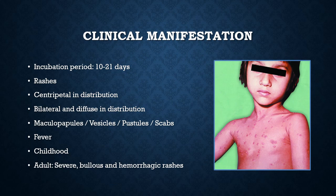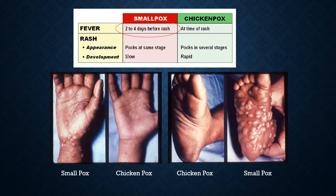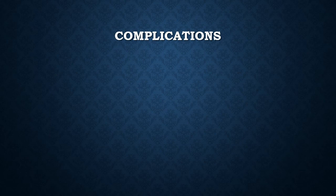Chickenpox must be differentiated from smallpox. In smallpox, fever appears two to four days before the rashes, while in chickenpox fever appears at the time of rashes. In smallpox, rashes appear at the same stage simultaneously, while in chickenpox lesions are in several stages of development. Development is slow in smallpox but rapid in chickenpox. Chickenpox is generally a less severe disease compared to smallpox.